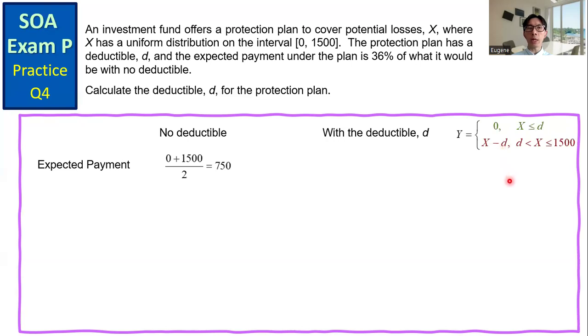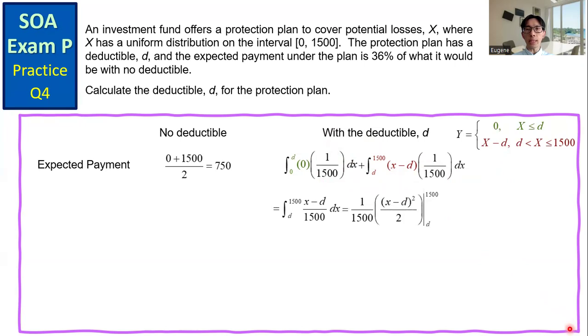Set up the expression to compute the expected payment. The first term is 0, we only need to work out the second term. Using standard integration technique, we get the expression.